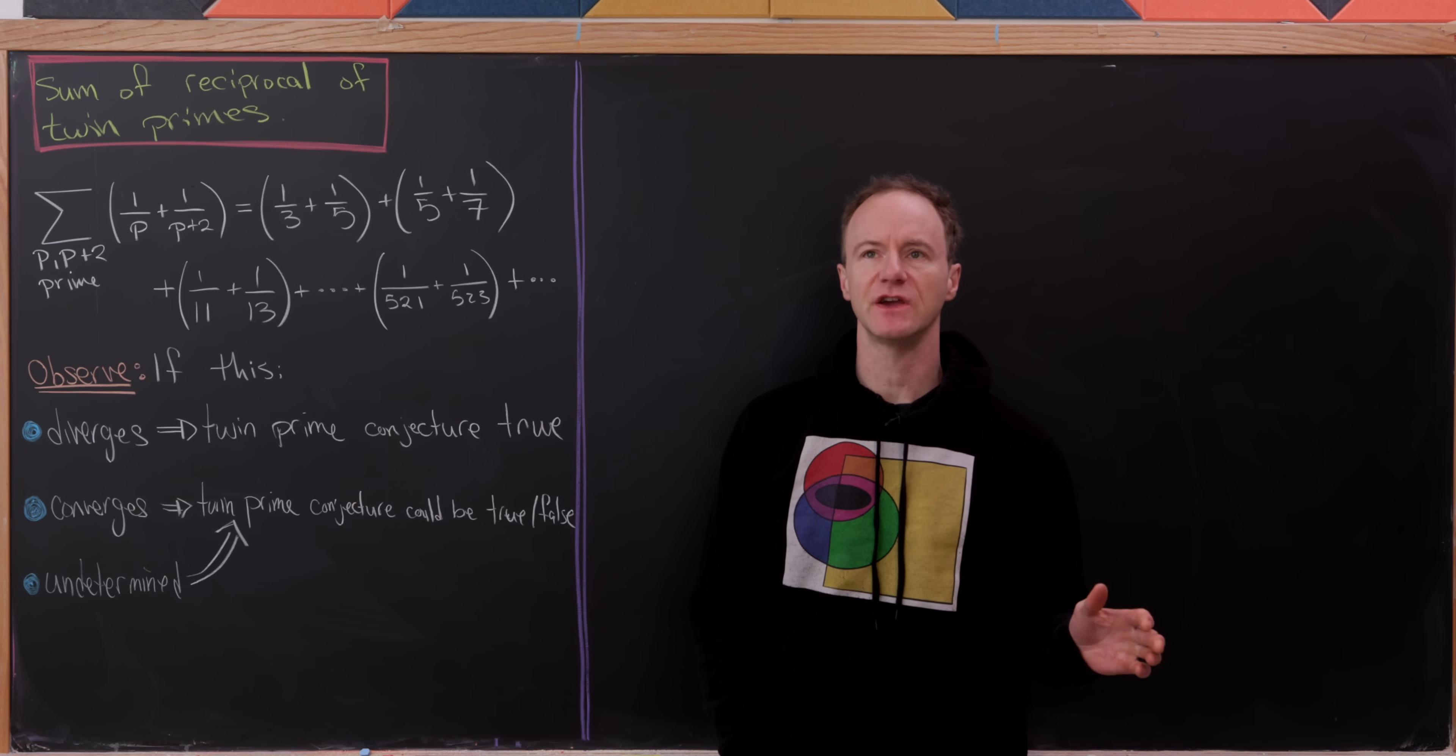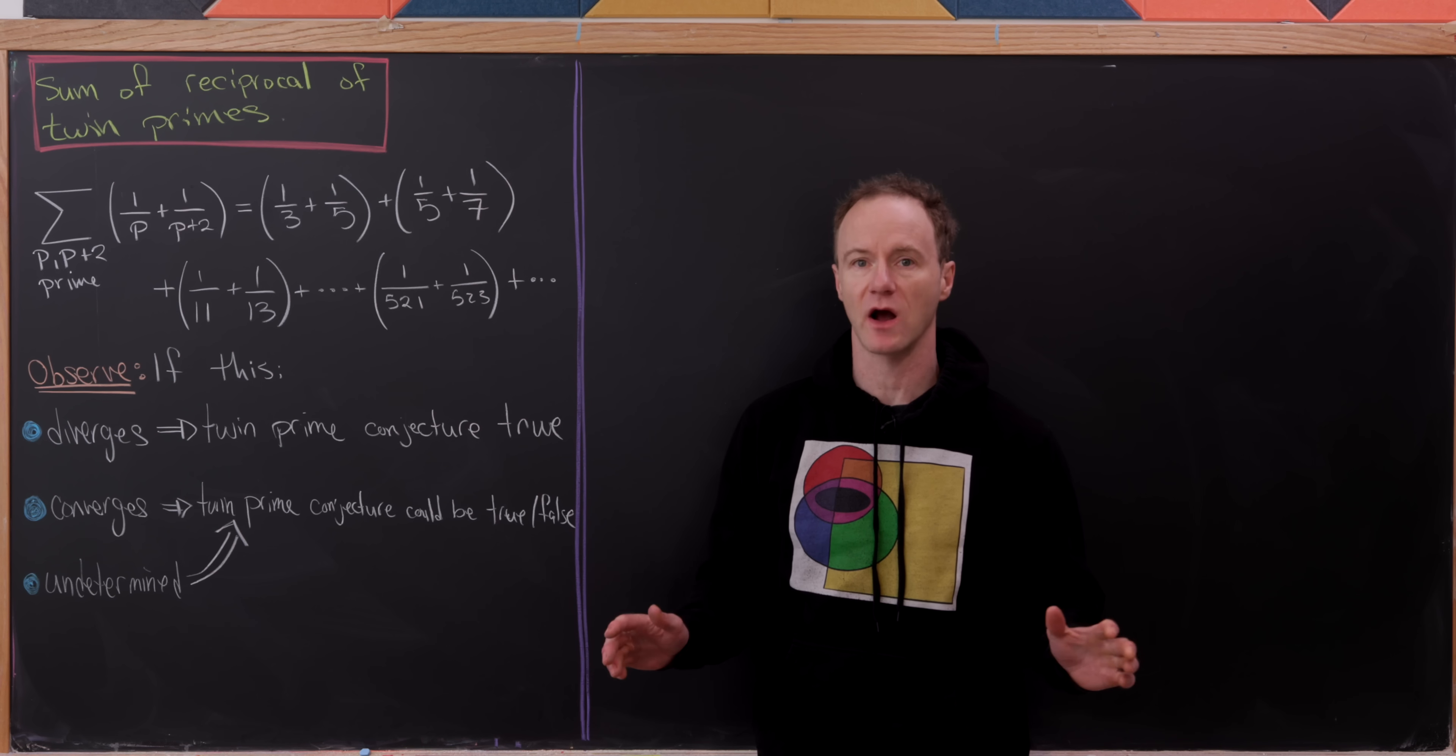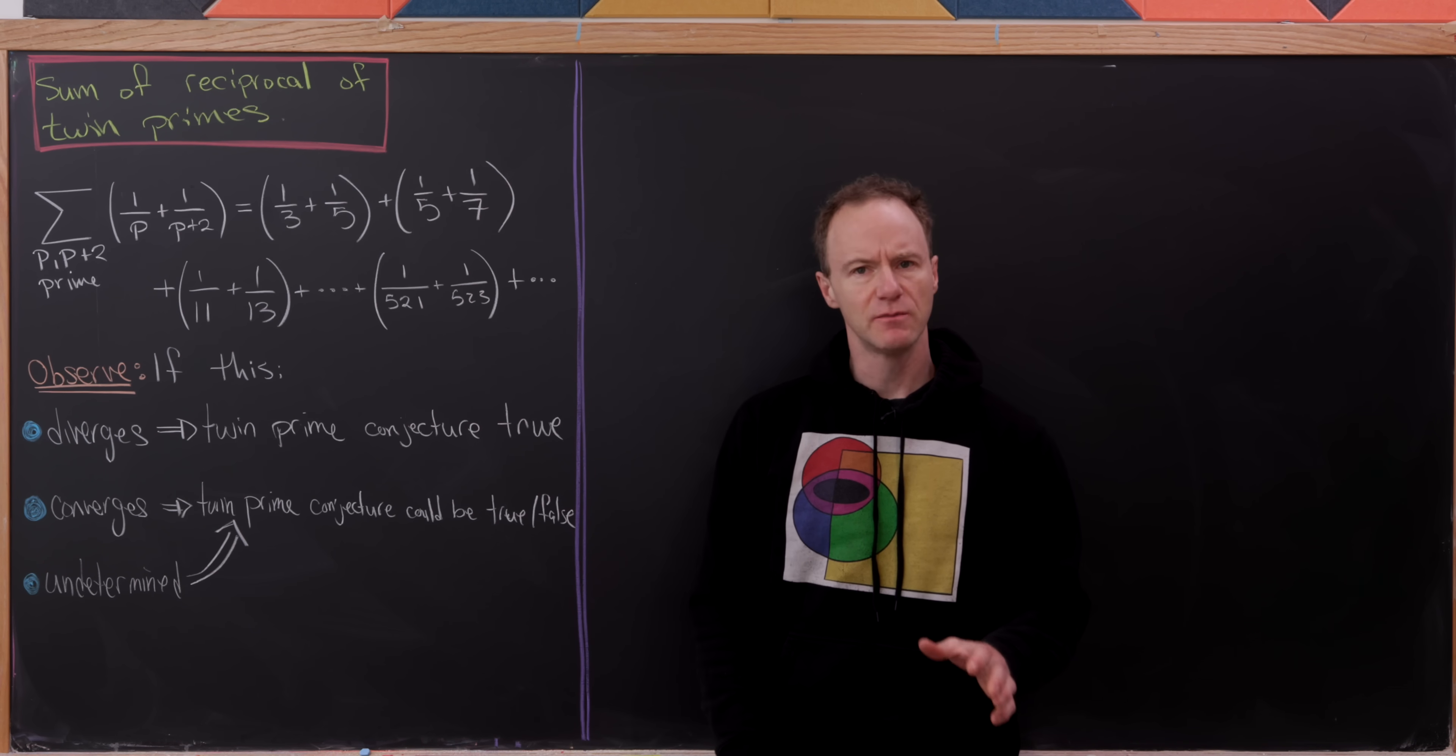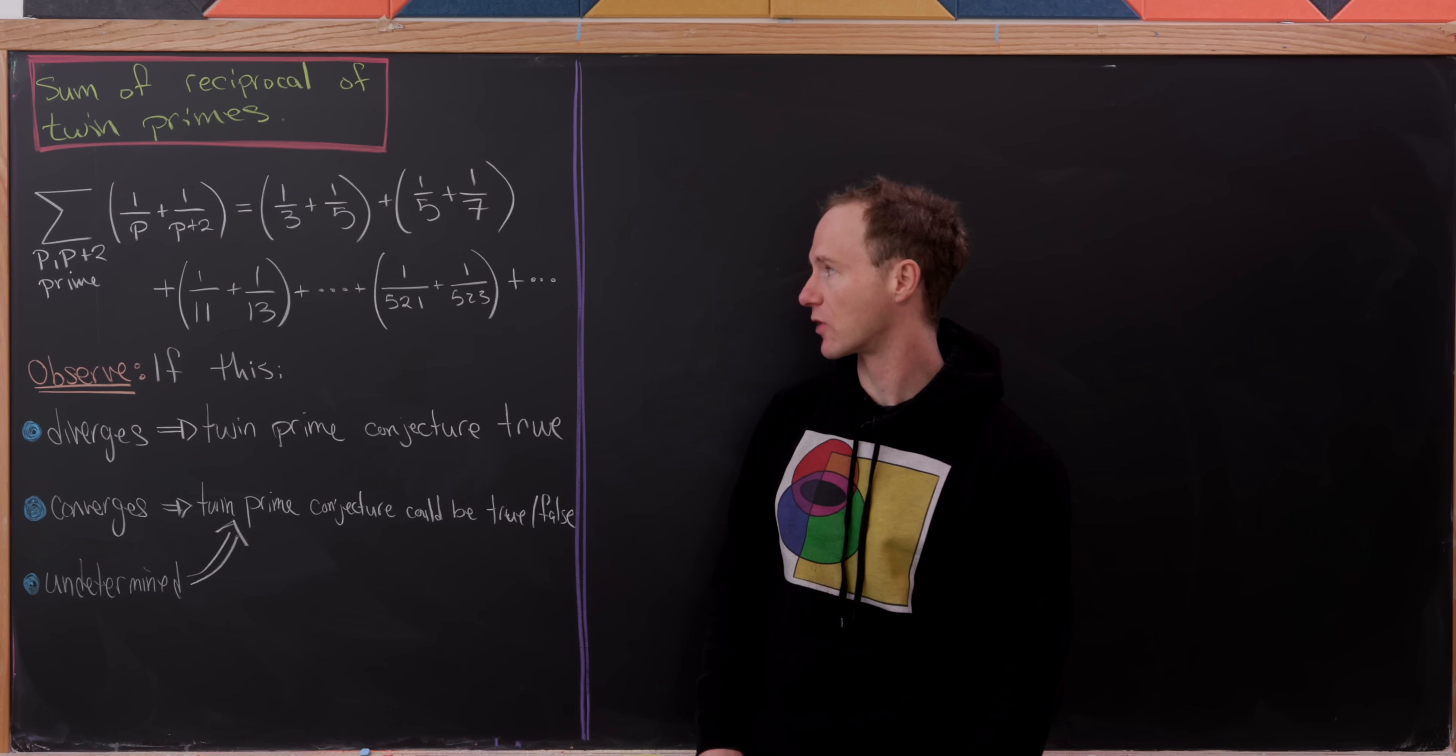Previously on the video we proved that the sum of the reciprocal of all primes diverges. But what if instead of looking at all primes we only look at twin primes?